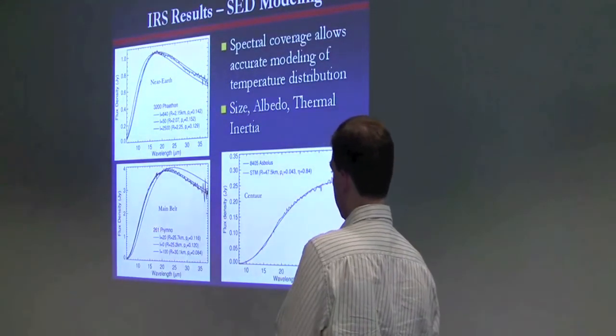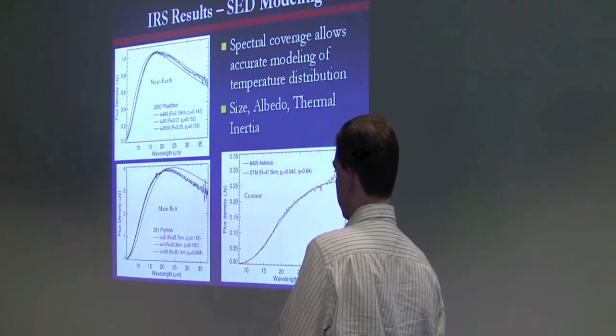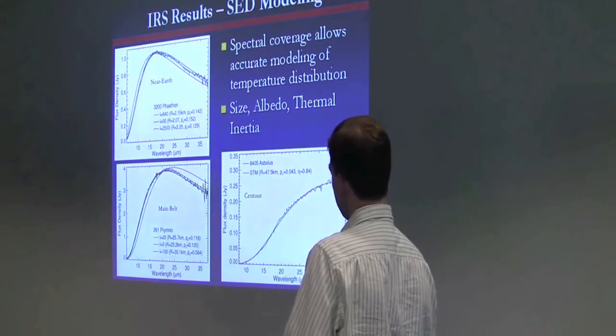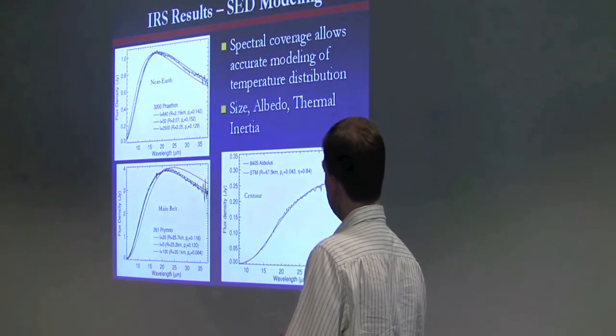Main belt asteroid Prymno, on the other hand, is best fit with a low lunar-like thermal inertia. Let's see.